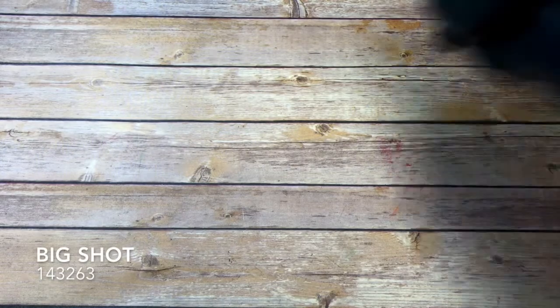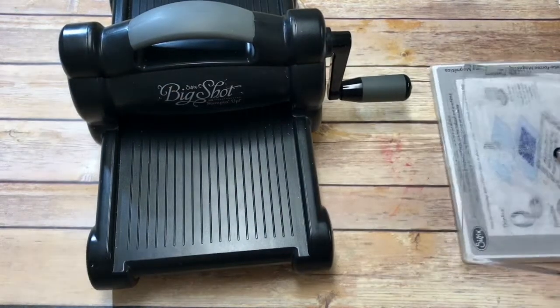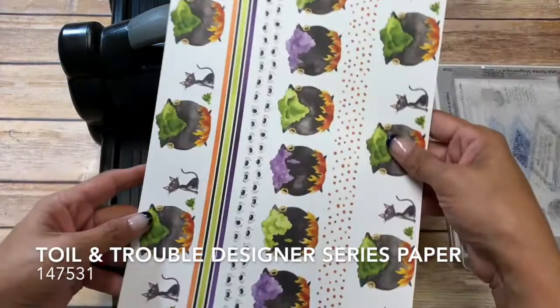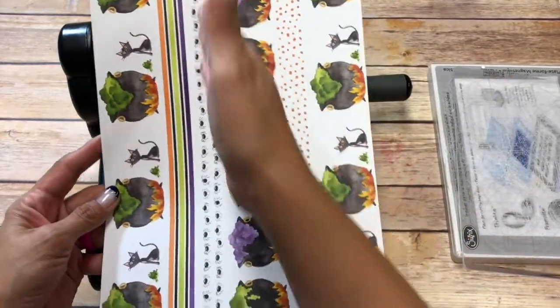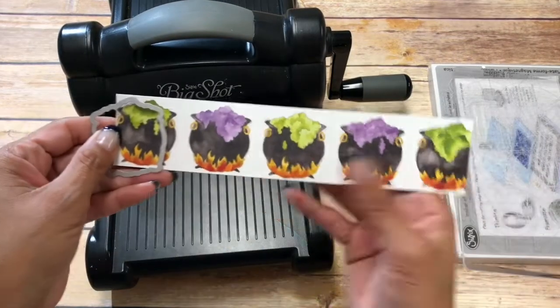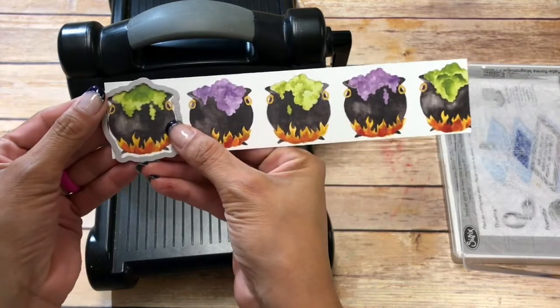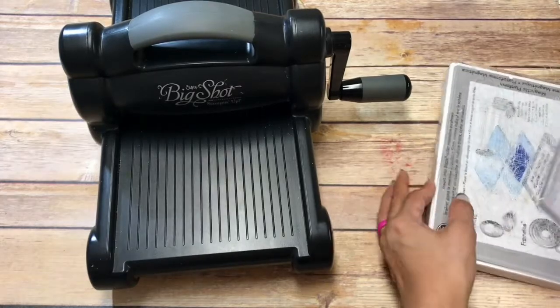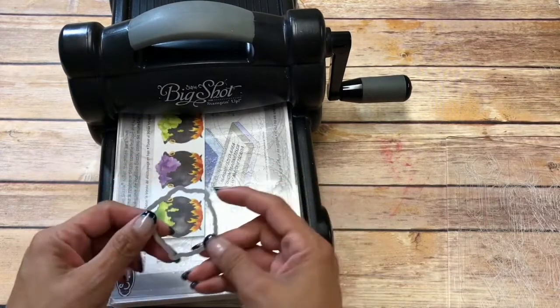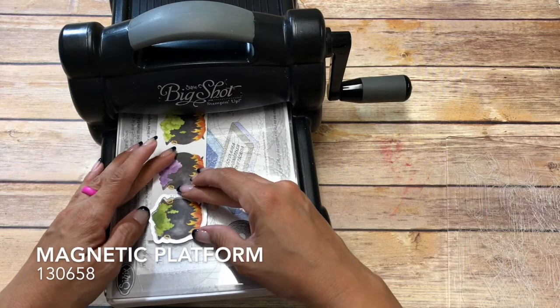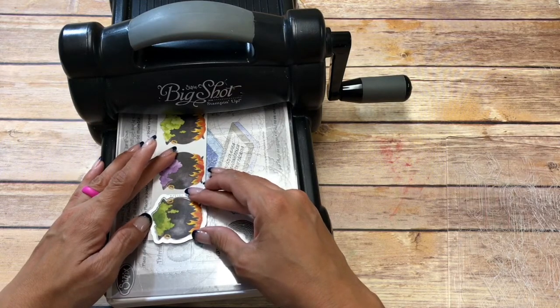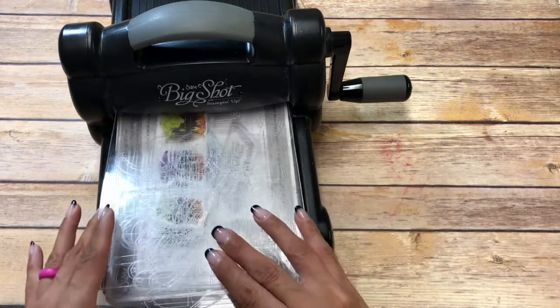Okay, so first we are going to bring in the Big Shot. What I did was I got the Toil and Trouble designer series paper and I cut it along the edges so that I could get different borders. It works out perfectly because we can get our little cauldron and die cut. I have my magnetic cutting platform down.